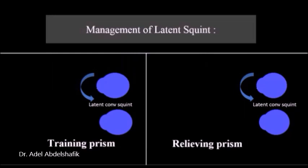Again in the management of latent squint, we can use prisms either as a training prism or a relieving prism. This patient got a latent convergent squint. If we apply a base in prism, image will be shifted outwards and the patient has to do more effort to shift his eye outward to see the image. So this will be more training for the lateral rectus so we are going to improve the situation. So this is a training prism.